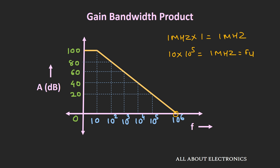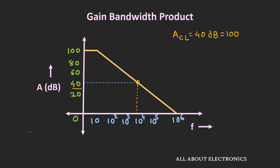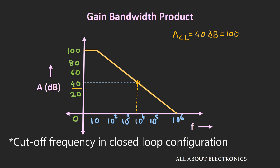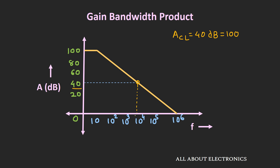Using this gain bandwidth product, it is easy to identify the cut-off frequency of the op-amp whenever it is being used in a closed-loop configuration. For example, if we are using this op-amp in a closed-loop configuration and we have set the gain to 40 dB which corresponds to 100, in the frequency response we will get a constant gain of 40 dB until this line intersects the open-loop gain response of the op-amp. Beyond this intersection point, the response will follow the open-loop response, and this intersection point is known as the cut-off frequency. Below this cut-off frequency the gain will remain constant, so we can get a higher bandwidth in closed-loop, and we can find this cut-off frequency using the gain bandwidth product.